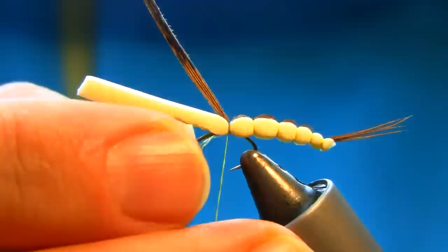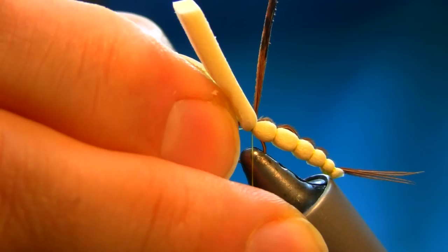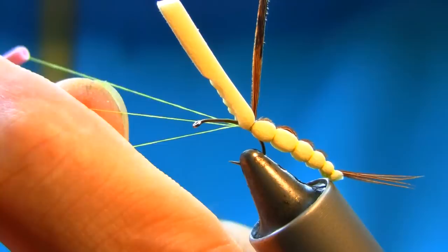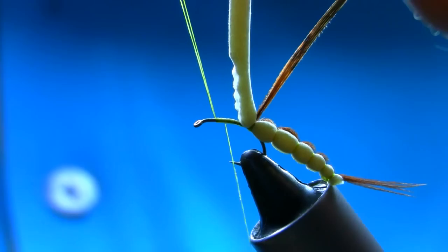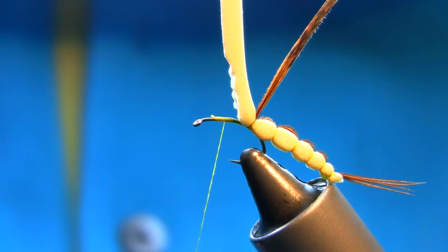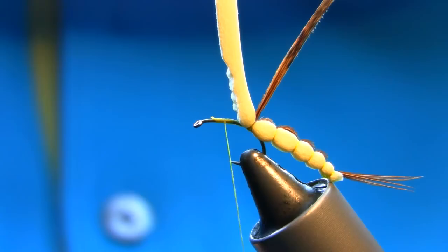Now bring the hook back to the normal position, and all this thread at the end, just catch it nicely to secure it properly so the body doesn't split. Let's just take away this waste piece, and these are secured properly.